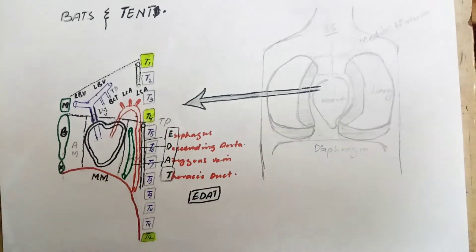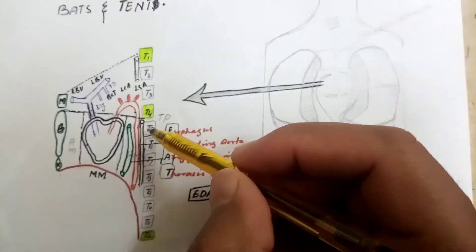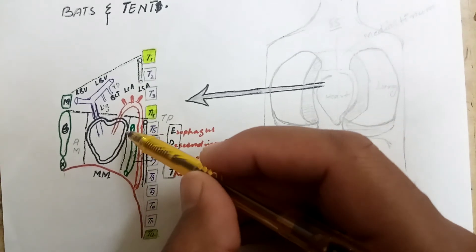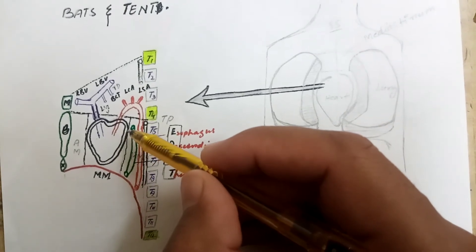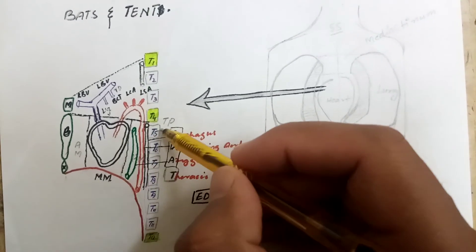The middle mediastinum is the space occupied by the heart and pericardium of the heart.